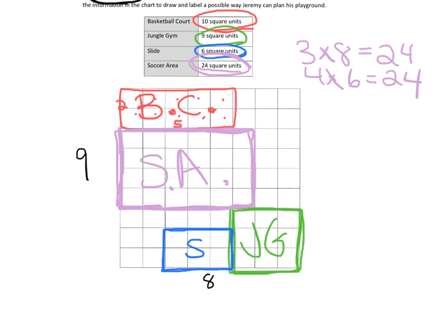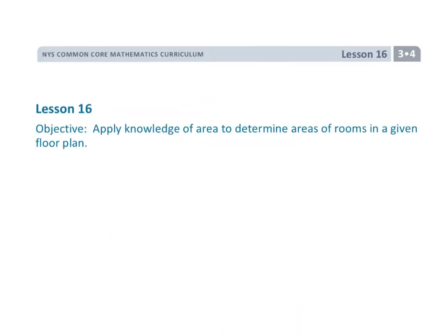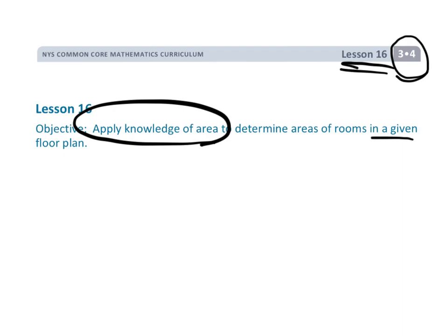And then what is all this extra stuff? Maybe all this stuff is grass. So this is all grass right here. And that is the playground that I have created for Jeremy. And that wraps up grade 3 module 4 lesson 16, using what we know about area. And in this case, we created a floor plan for a playground.